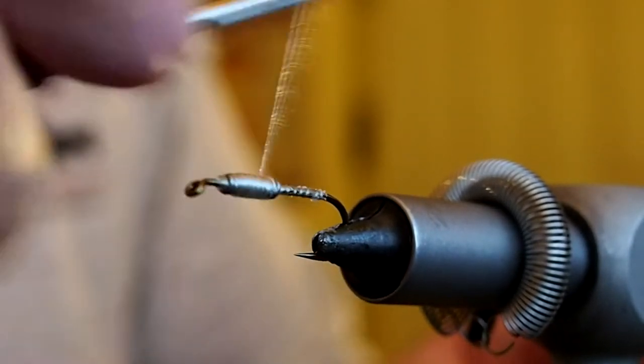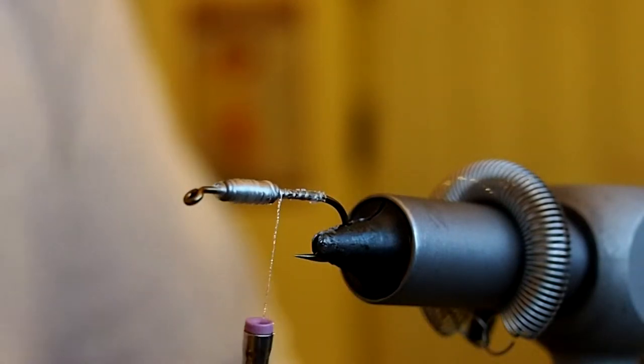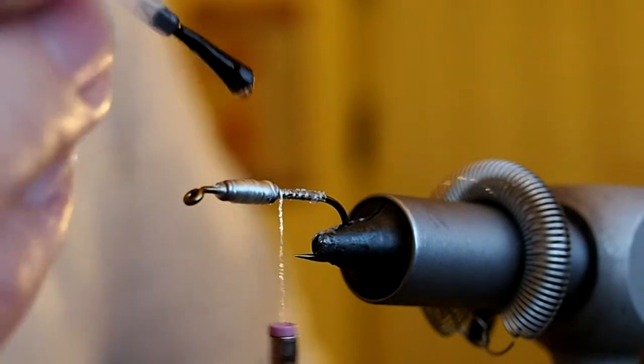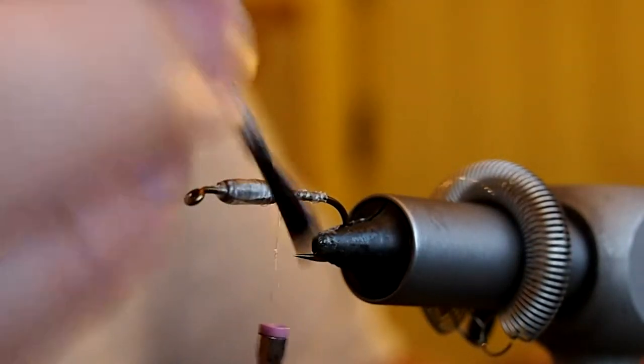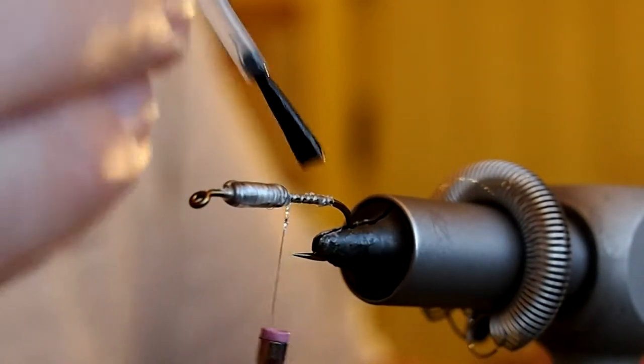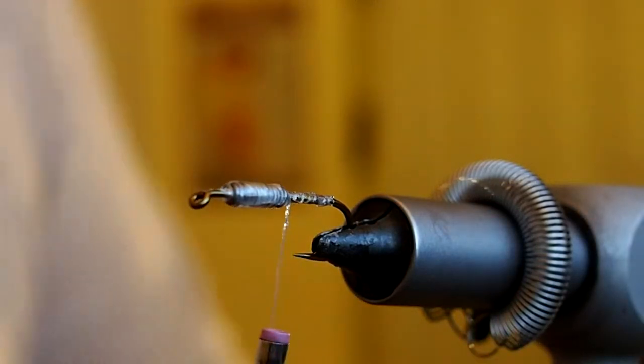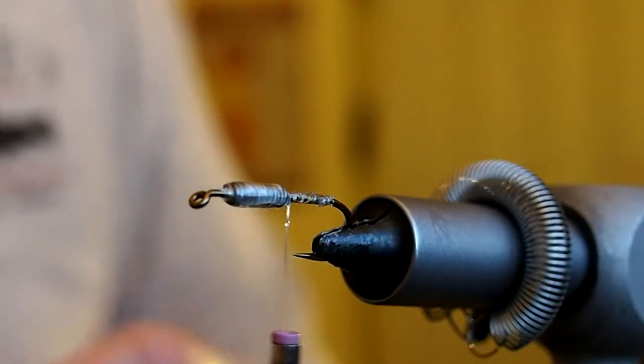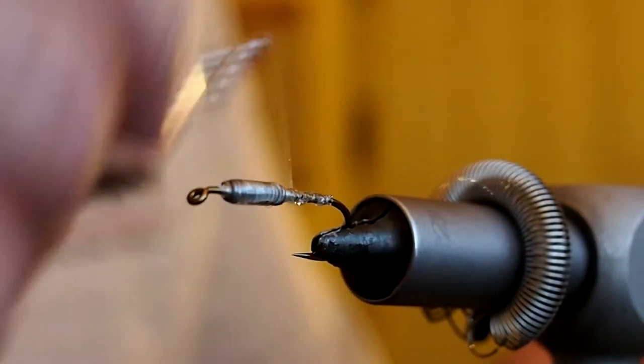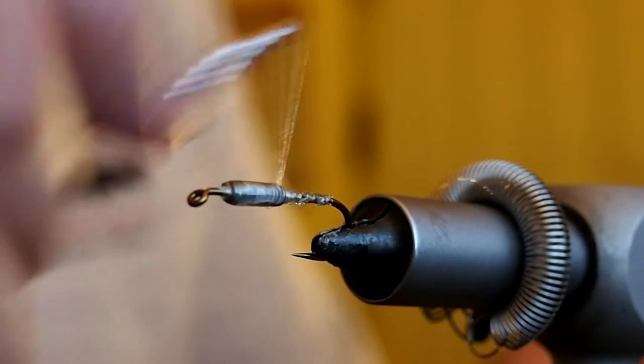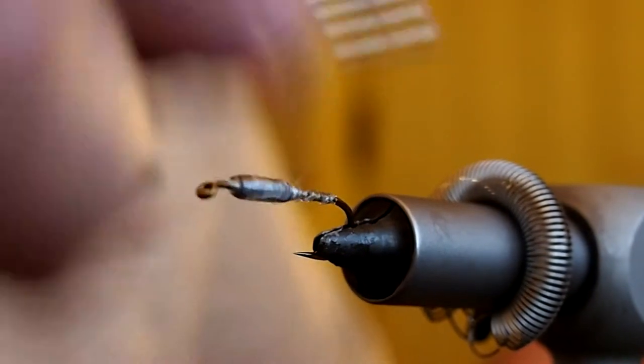I'm going to go ahead and hit that one more time with some Sally Hansen's just to protect the lead and keep it from bleeding through our floss wraps, thread and floss wraps. Next I'm going to go ahead and build up a decent taper with our thread and build up the rear of the fly.